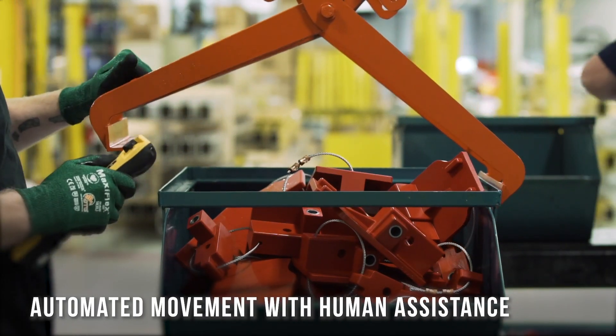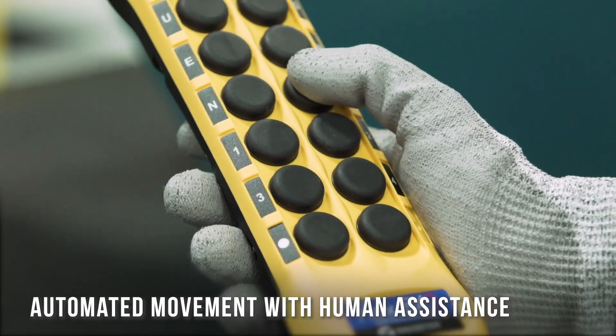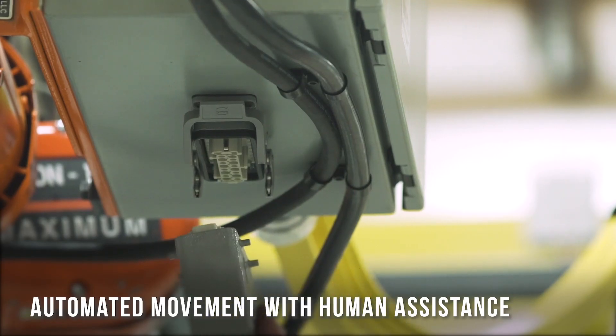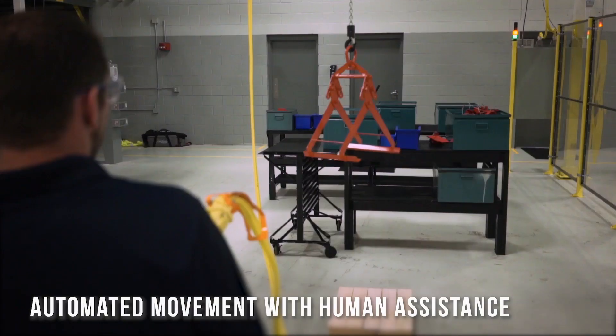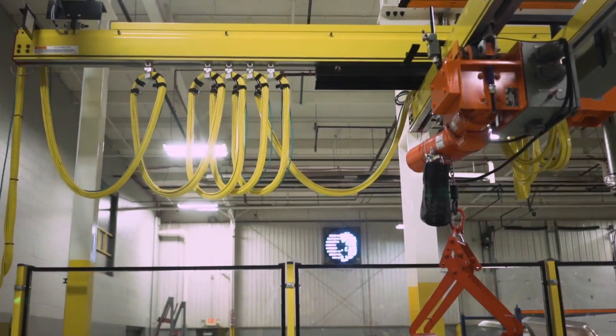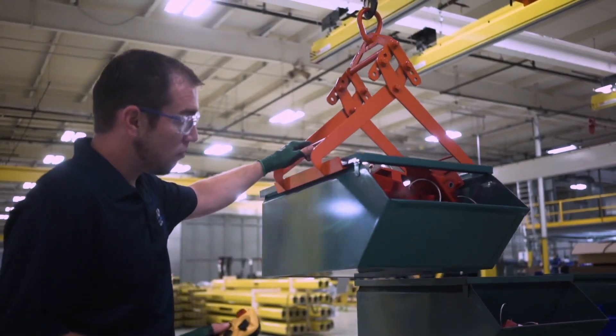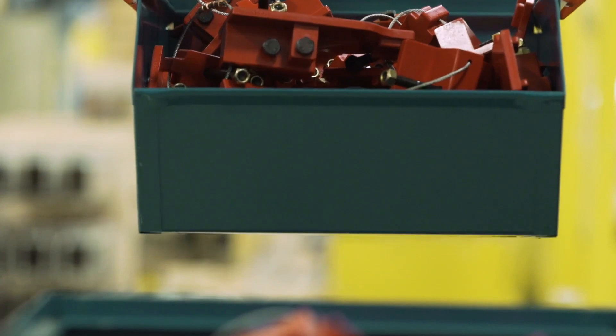An operator initiates movement via Magnatec brand Flex EX2 radio remote controls or tethered SBP2 pendant push-button stations, which direct a crane to travel to a specific location. Magnatec's impulse family of variable frequency drives power the bridge, trolley and hoist motions using specialized software specifically designed for overhead material handling applications.